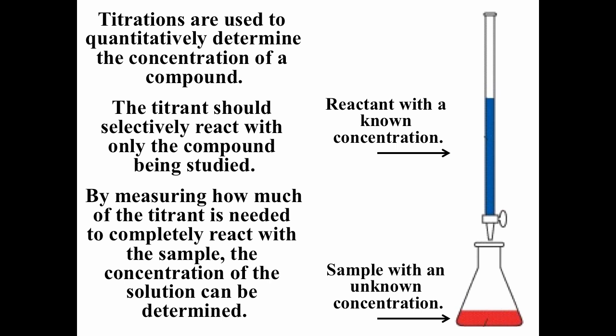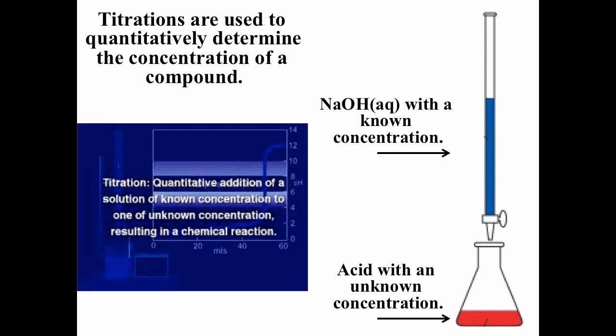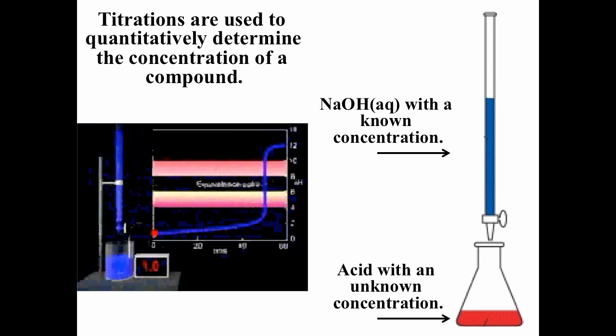Titrations are used to determine the concentration of a compound. The reactant with a known concentration goes in the burette; the sample with an unknown concentration goes in the flask. By measuring how much of the titrant you have to add to completely react with the analyte, you can determine the concentration of the analyte. Quantitative addition of a solution of known concentration to one of unknown concentration resulting in a chemical reaction is called titration. Acid-base titrations are among the most common.